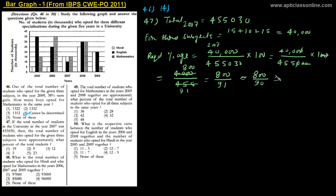Simplifying through approximations, this reduces to approximately 80 by 9, which is approximately 8.8, so approximately 9%. Therefore the answer is approximately 9%, and option 2 is correct. This is how we solved question 47.